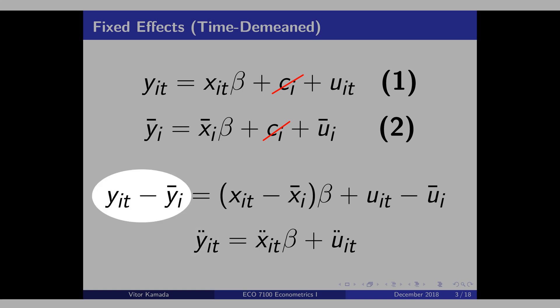The y two dots is just this expression here. The x two dots is just this expression. See that there is no Ci here, and the Ci is not inside the error term. Beta can still be biased, but not because of Ci, because of another problem.